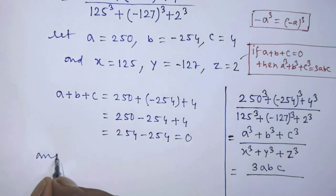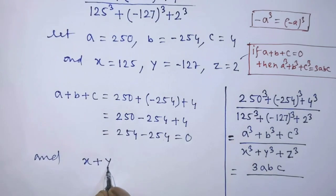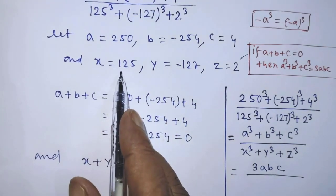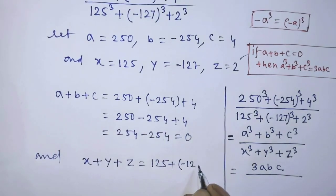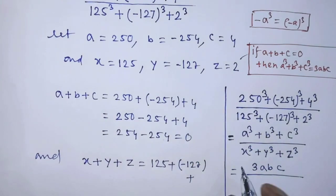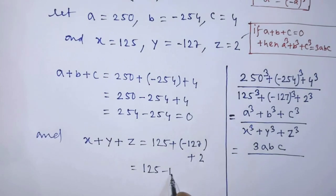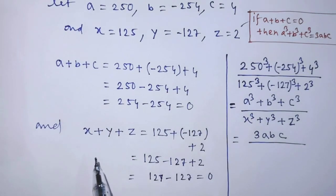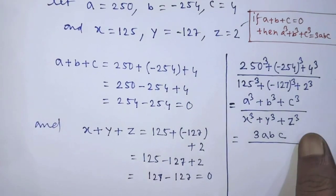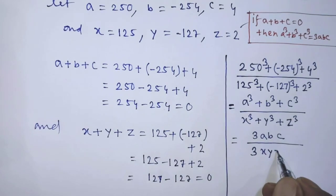Similarly, we have to find the value of X plus Y plus Z. So X plus Y plus Z is equal to 125 plus minus 127 plus 2, which gives us 125 minus 127 plus 2, that is 127 minus 127, which equals 0. The sum of X, Y, and Z is also equal to 0. So similarly, according to this formula, in the place of denominator we get 3 times X times Y times Z.